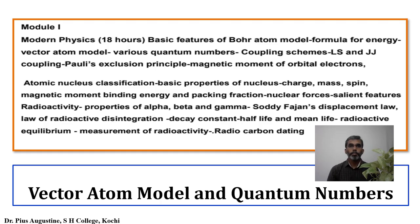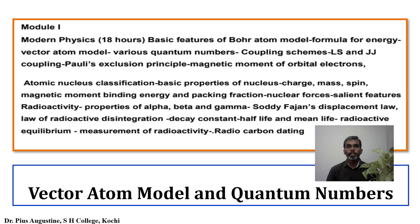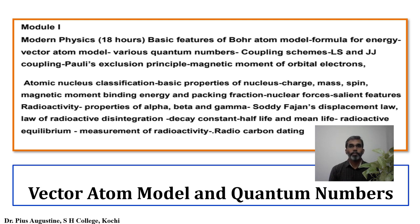Today we will see vector atom model and quantum numbers. Even though Bohr atom model could explain the origin and the series of hydrogen spectra or spectra of hydrogen-like atoms, it failed to explain the fine structure of spectral lines. For example, in the Balmer series of hydrogen spectra, that is the visible range of hydrogen spectra, it is not a single line — maybe two lines of precise wavelength with very small separation, maybe 0.13 angstrom as also mentioned in the textbook, which could not be explained with Bohr atom model. Another issue was that even though Bohr atom model predicted stationary orbits, it could not explain the distribution of orbital electrons in these shells or orbits.